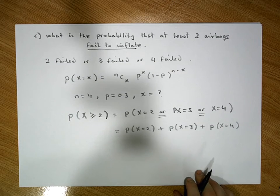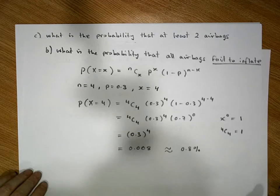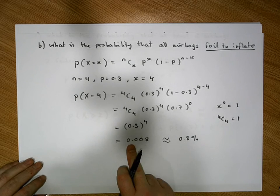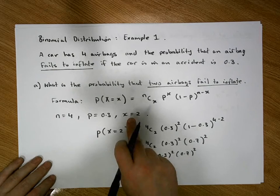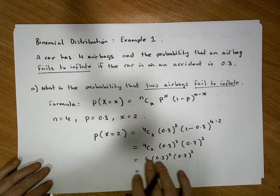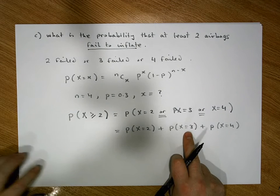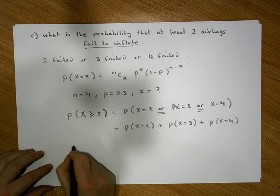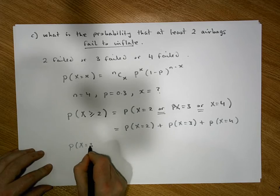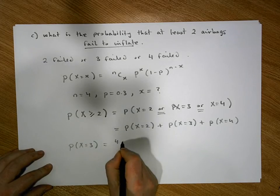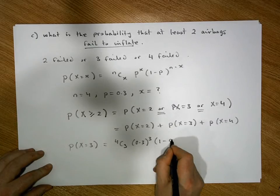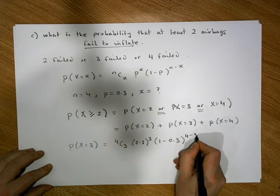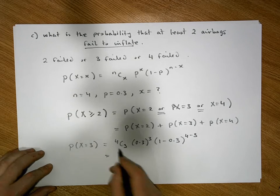From our previous example, we already know that P(X=4) is 0.008. From the earlier example, we also know that P(X=2) is 0.2646. So the only probability we still need to calculate is P(X=3).